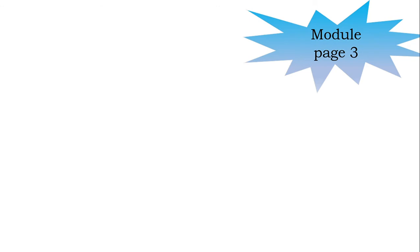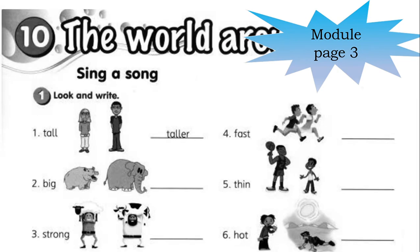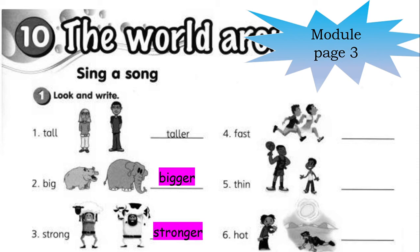Now class, look at your module, page 3. You are going to make comparisons. Teacher already gives the example: the girl is tall, but when we make comparison, this boy is taller. Big, bigger. Strong, stronger. Fast, faster. Thin, thinner. Hot, hotter.